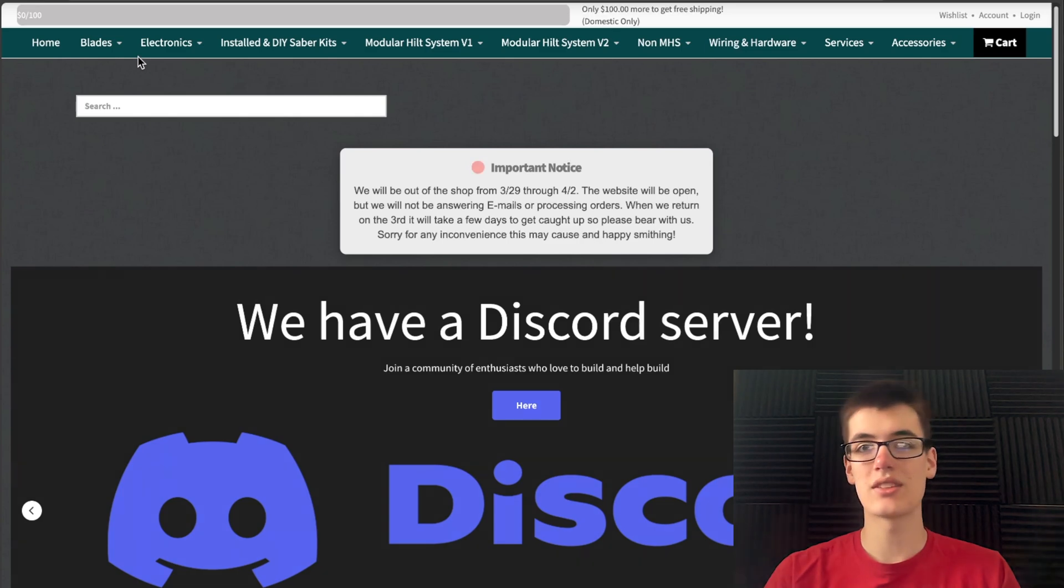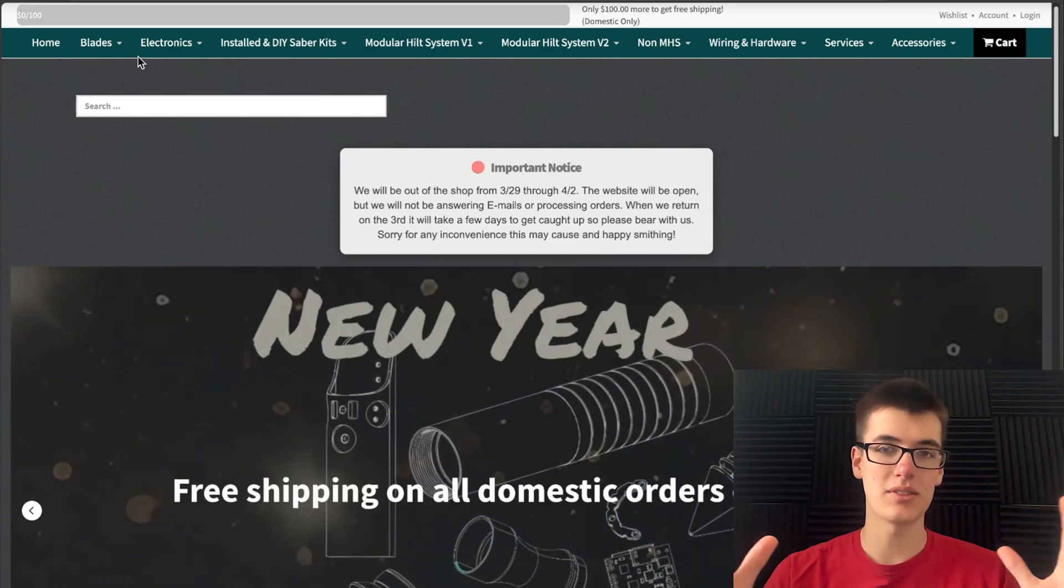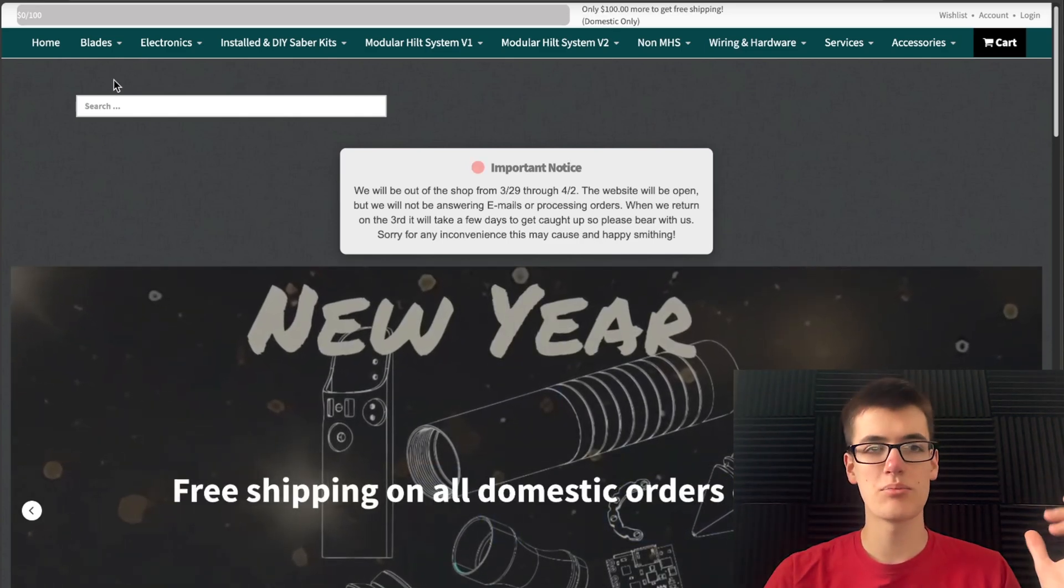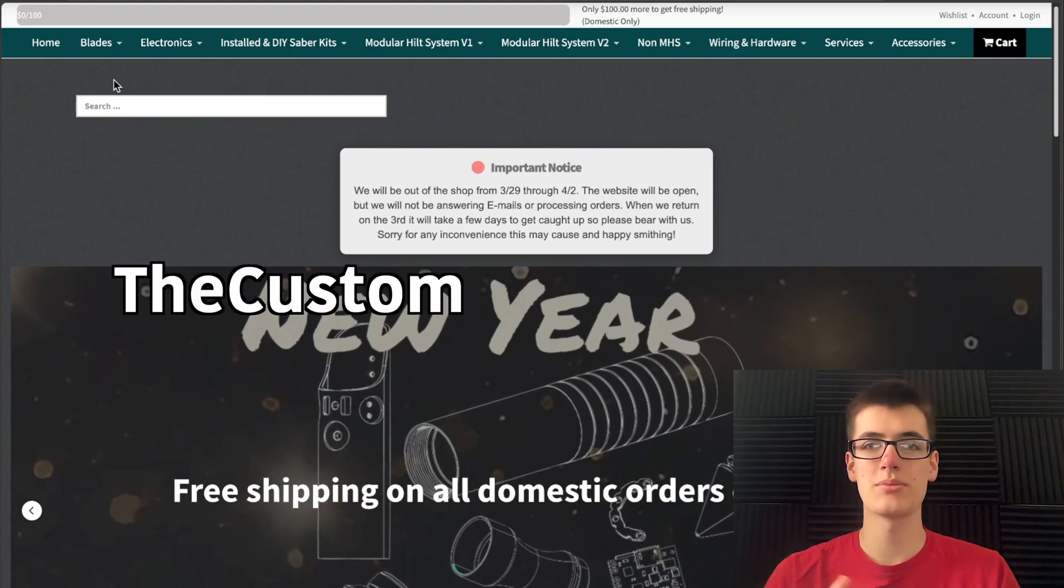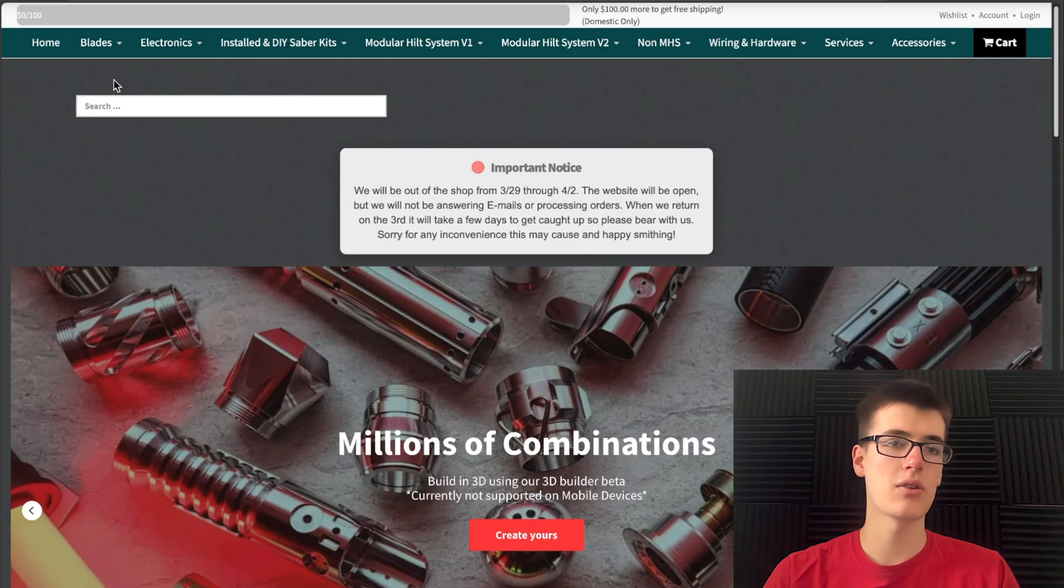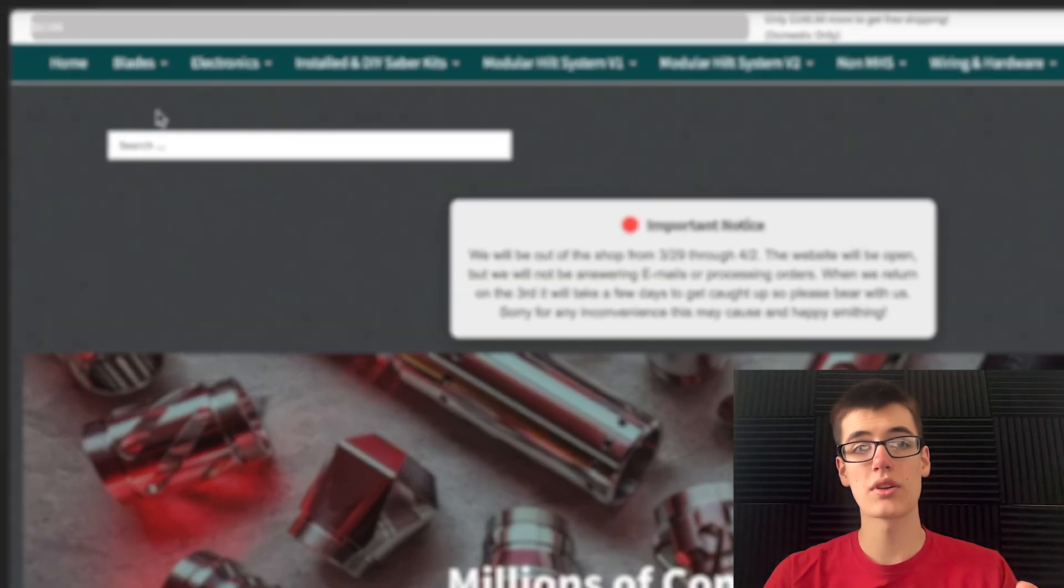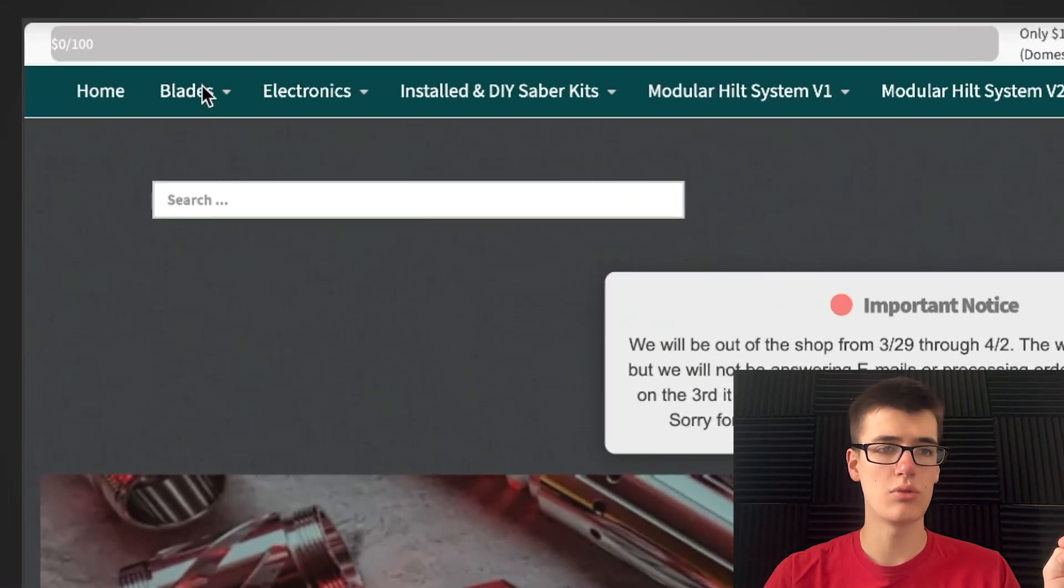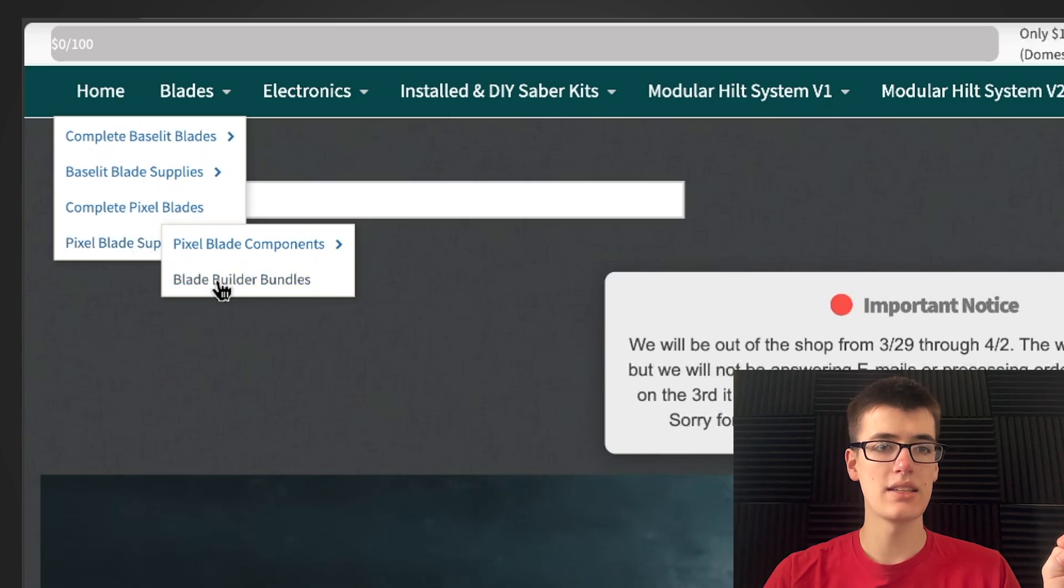The first thing we need to do is collect a few materials and a couple of tools. I like to get most of my materials from thecustomsabershop.com. If we navigate over there, I'll put a link in the description. What we're working with today is if you go to Blades, Pixel Blade Supplies, Blade Builder Bundles.